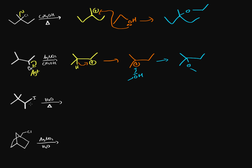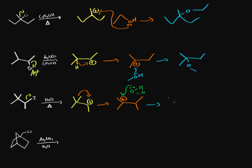The third SN1 example uses water and heat. Heat improves the chances of iodine leaving on its own. Iodine leaves, giving a secondary carbocation next to a quaternary carbon. A hydride shift isn't possible, but a methyl shift is — moving a methyl group converts the secondary carbocation into a tertiary carbocation. Water acts as a weak nucleophile, attacks the carbocation, and then another water molecule removes a hydrogen, giving a tertiary alcohol as the final product.